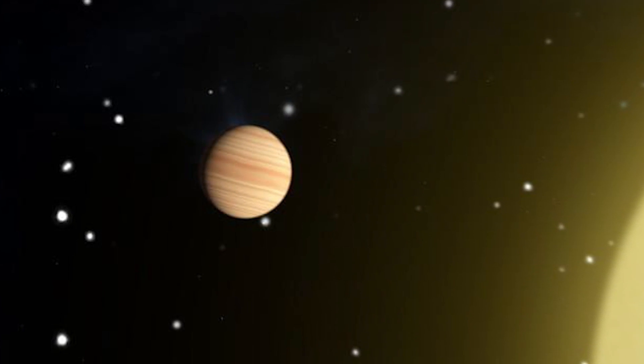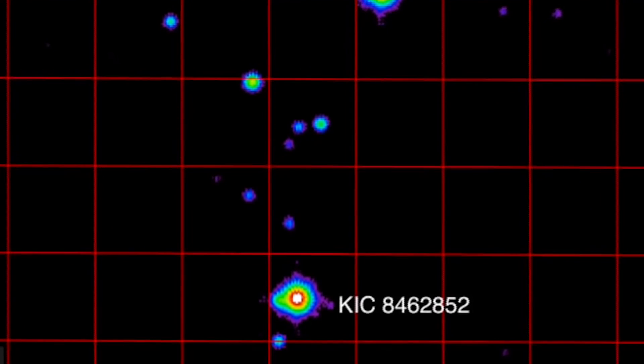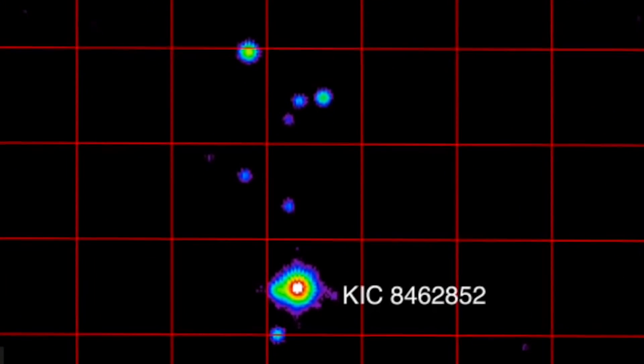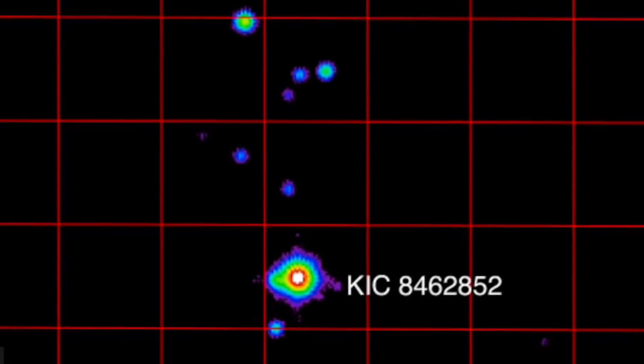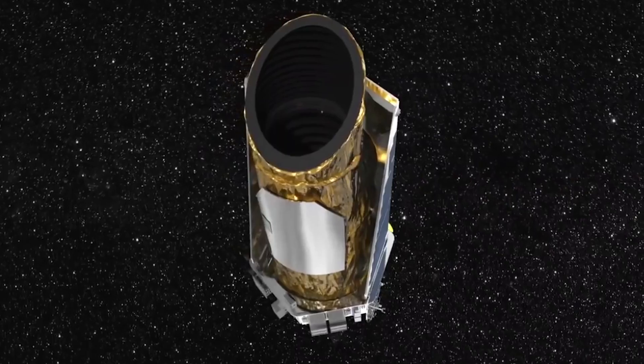When the Kepler Space Telescope identified it as a candidate for having orbiting Earth-like planets. But KIC 8462852 was emitting a stranger light pattern than any of the other stars in Kepler's search for habitable planets.